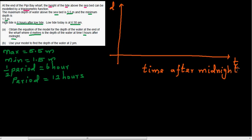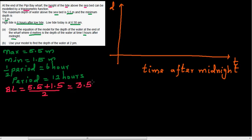We know the low tide is at 6 am. The baseline is the average of the maximum and minimum: (5.5 + 1.5) divided by 2 equals 7 divided by 2, so the baseline is 3.5. The amplitude is the distance from the baseline to the maximum: 5.5 minus 3.5 equals 2, or from 1.5 to 3.5 is also 2. So the amplitude is 2.